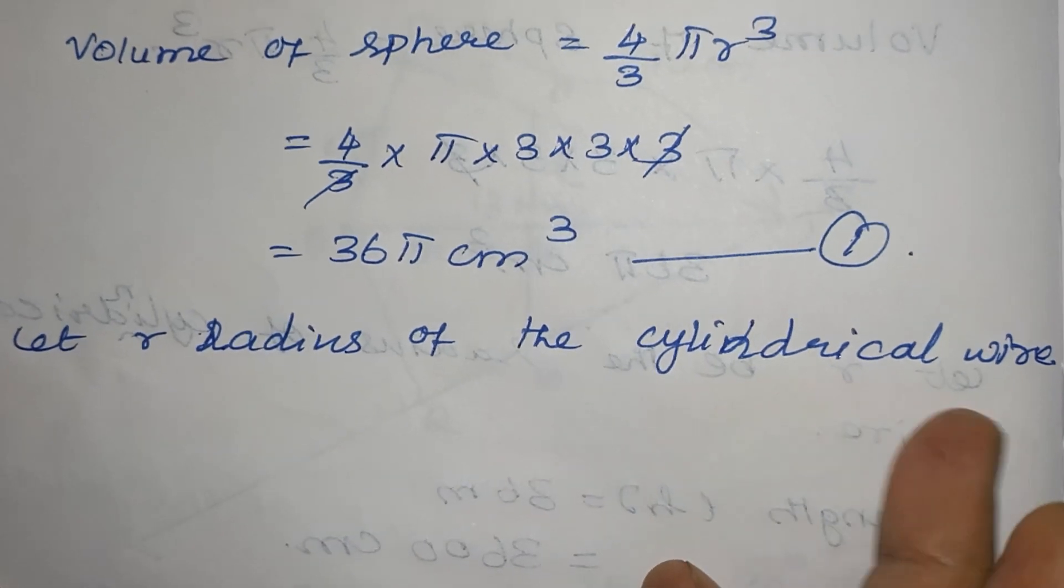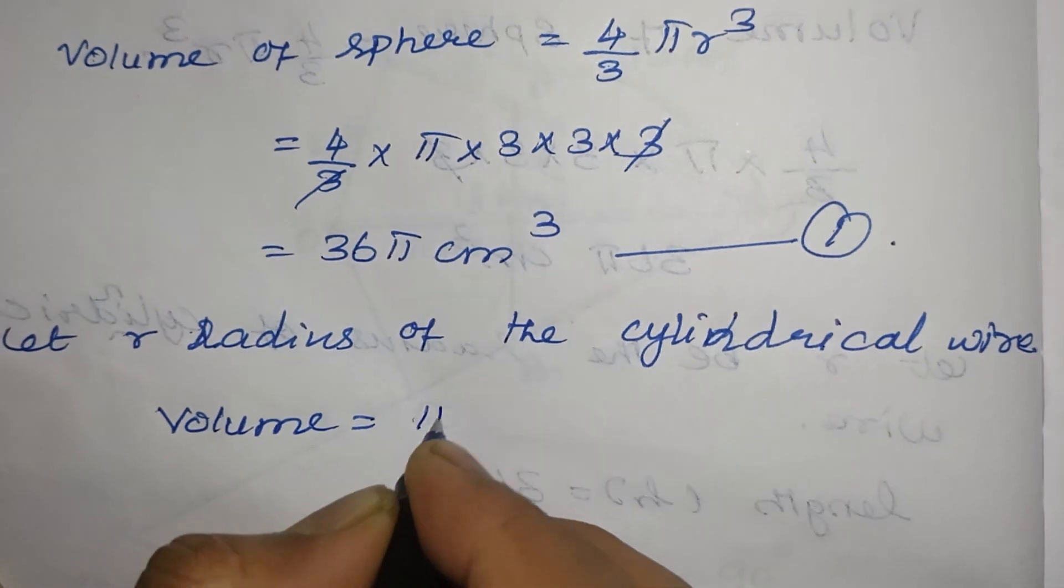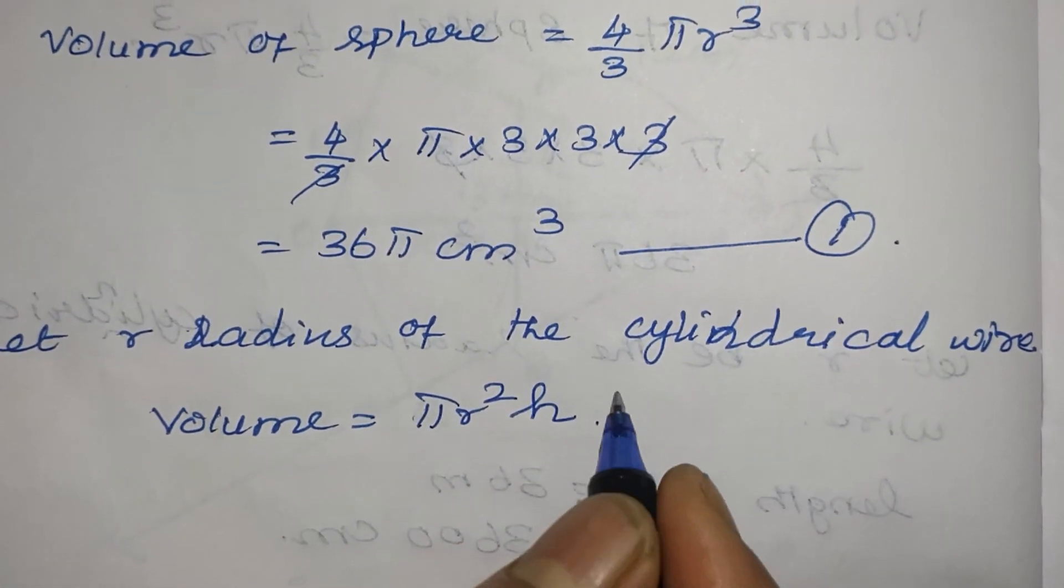What is the volume of cylinder? Volume of cylinder is volume equal to pi r square h. Now, it is a cylinder. Now, it is given if the length of the wire is 36 meter.